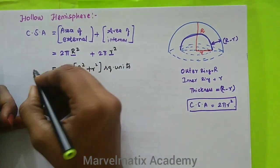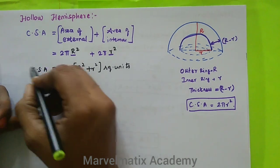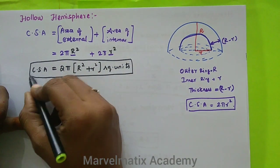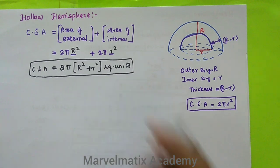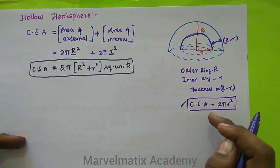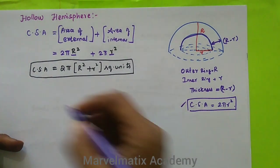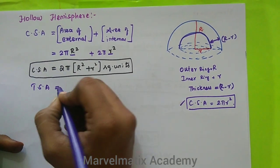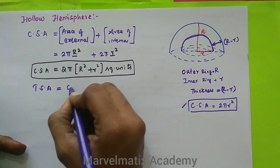If you have a hollow hemisphere, we find the Curved Surface Area — that is CSA of the hemisphere. Then for TSA, the Total Surface Area is equal to the CSA plus the area of the ring.